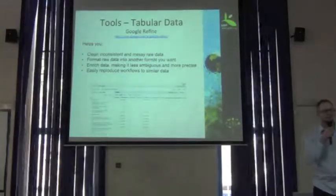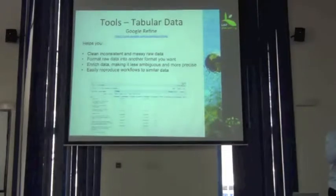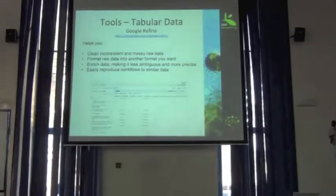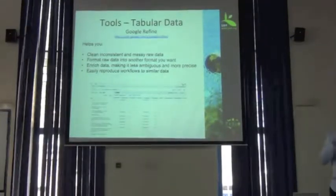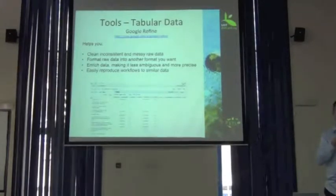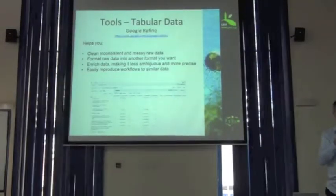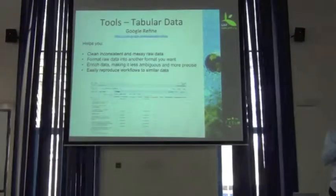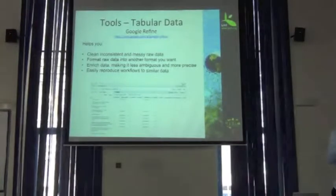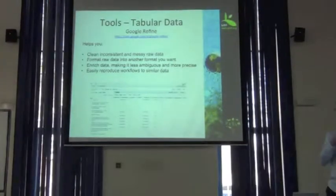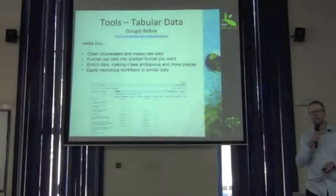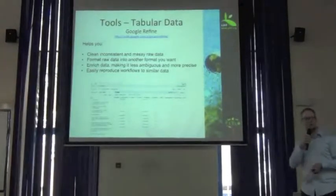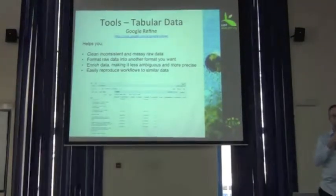I believe you guys recognize this one after all the sweat and tears from this morning — Google Refine. Hopefully we get the chance to explore this even more. It's really quite powerful. It can access web services to enrich your dataset, validate taxonomic names, and add columns for ISO country codes based on location information. There seems to be no end to what you can do with Google Refine.